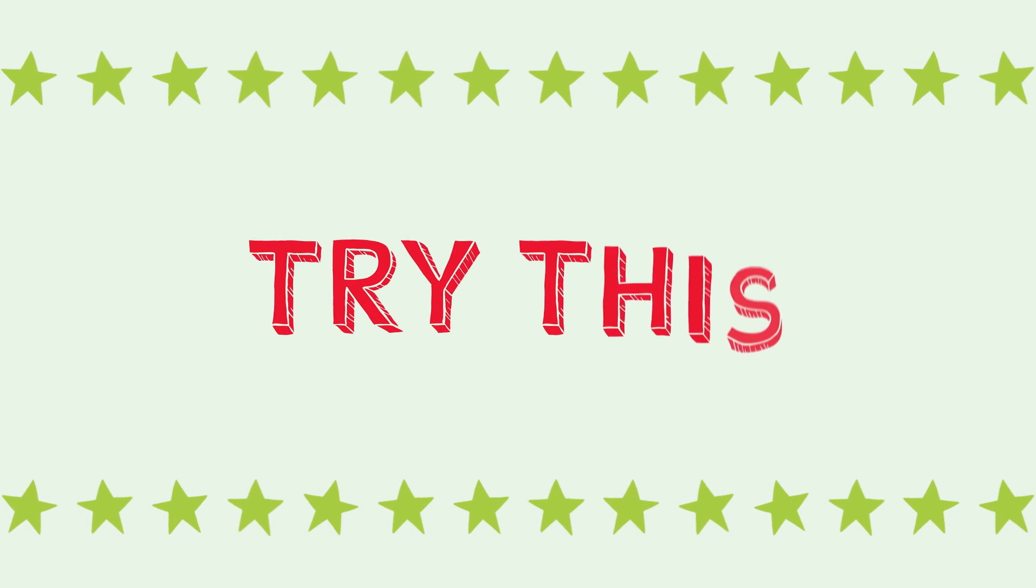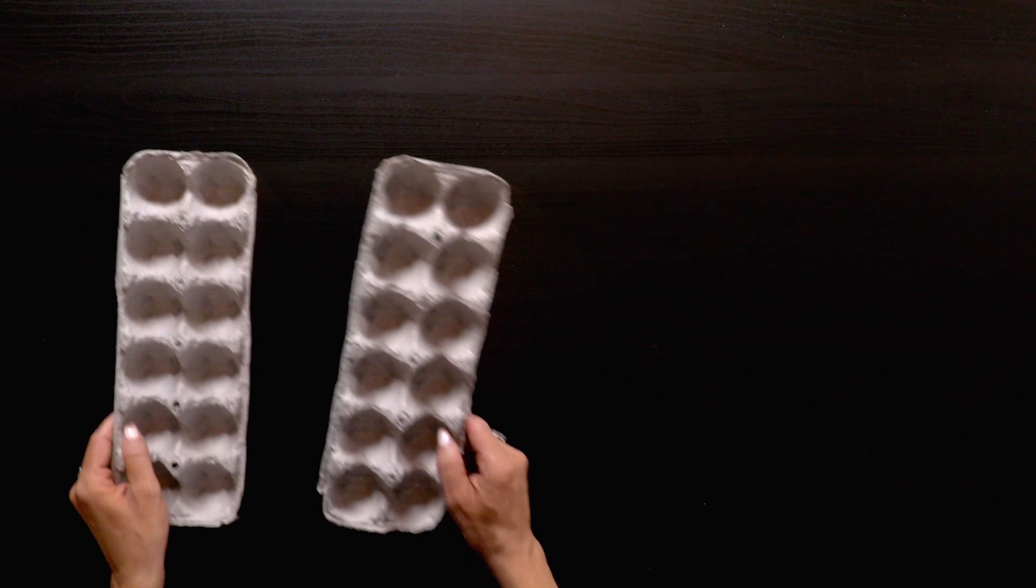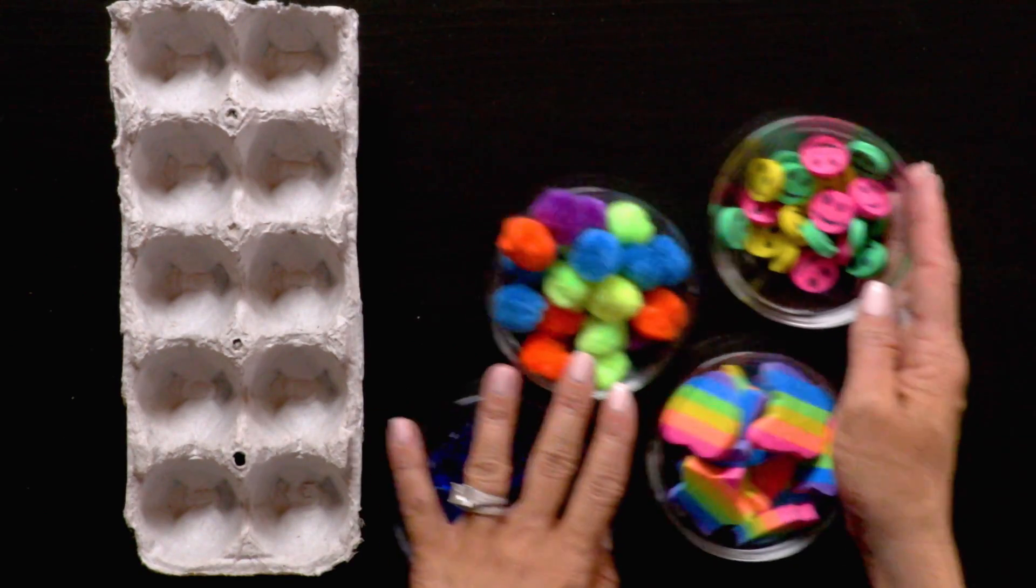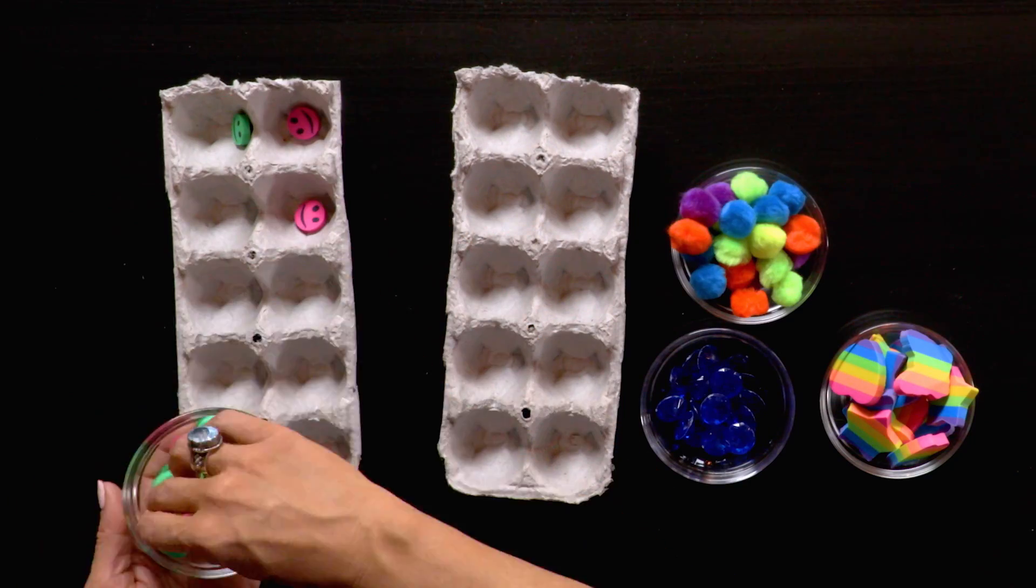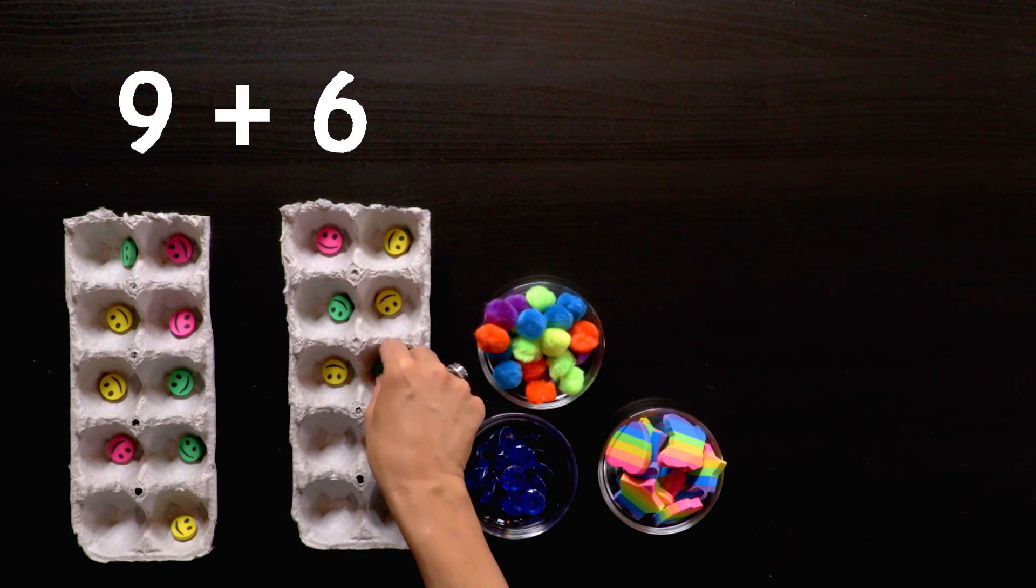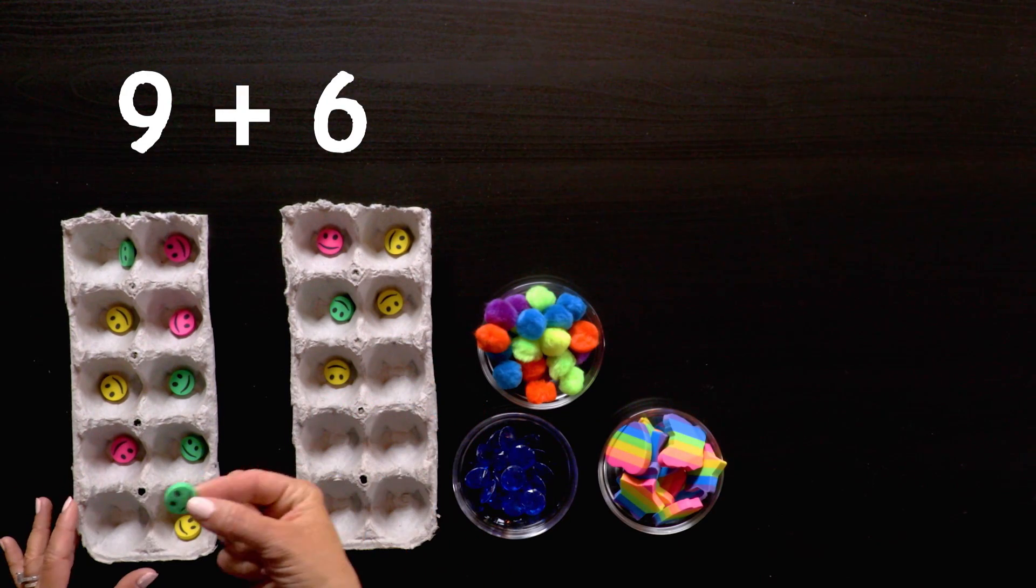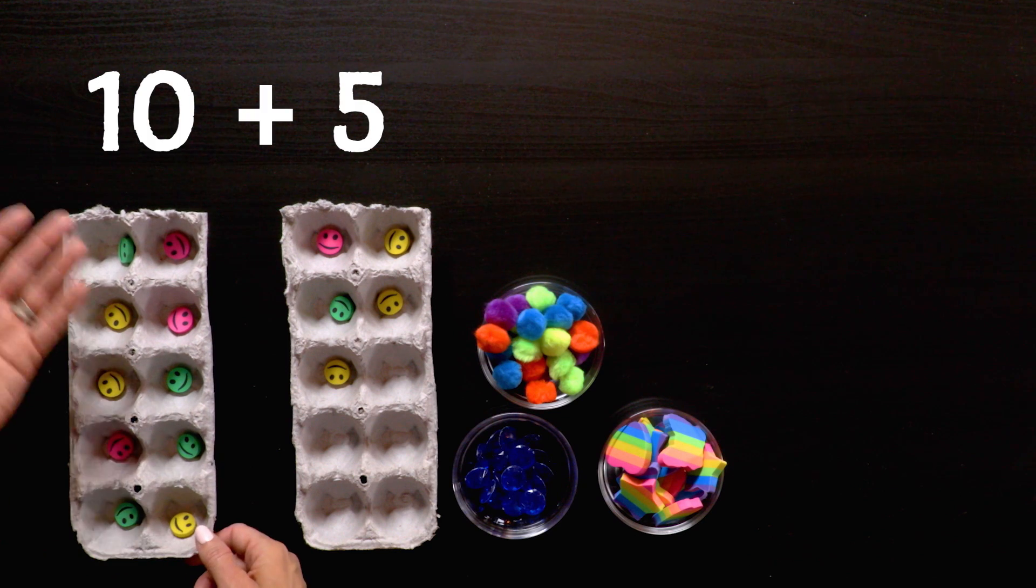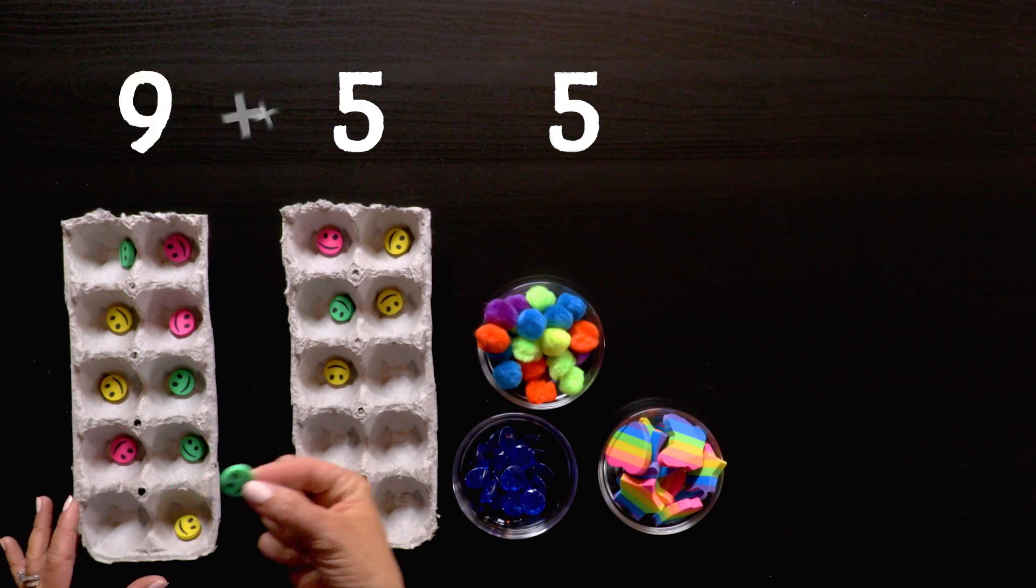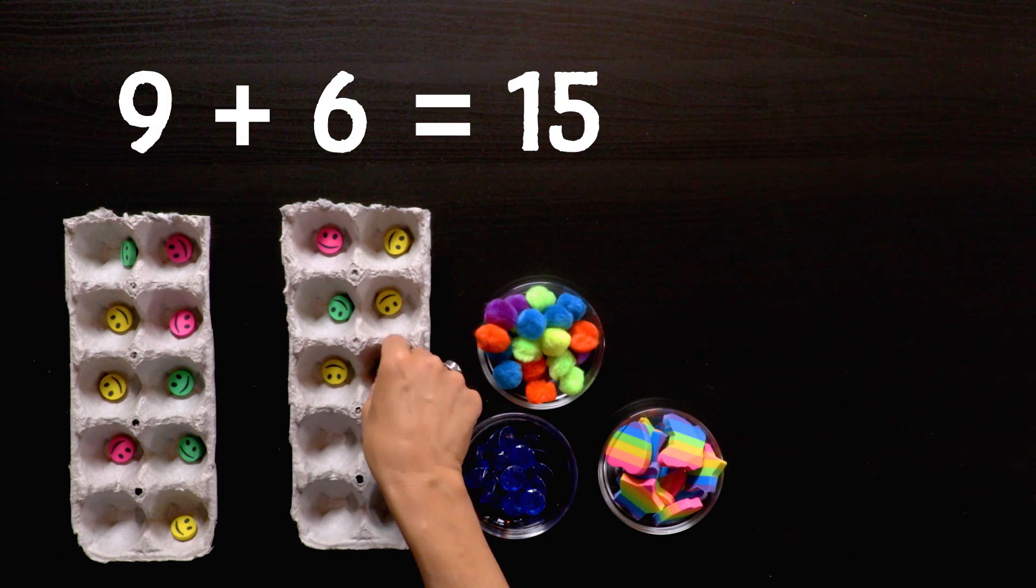For more practice, try this. Take 2 clean, empty egg cartons. Have a grown-up cut off 2 sections from each so they look like tins with 10 sections each. Then, use coins or other small objects or toys and make up your own addition and subtraction problems. For example, we can turn 9 plus 6 into a really easy problem by just moving one object to fill a tin. Now it's 10 plus 5, which is 15. And that means 9 plus 6 is also 15.